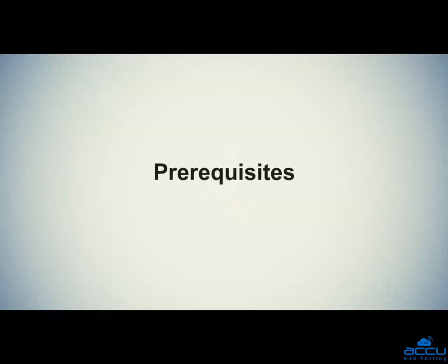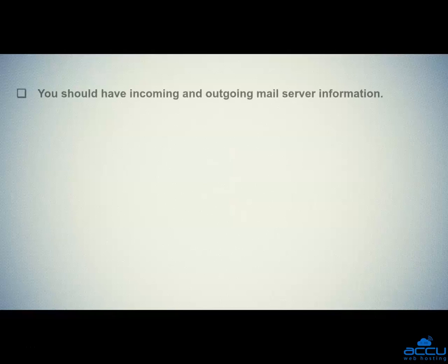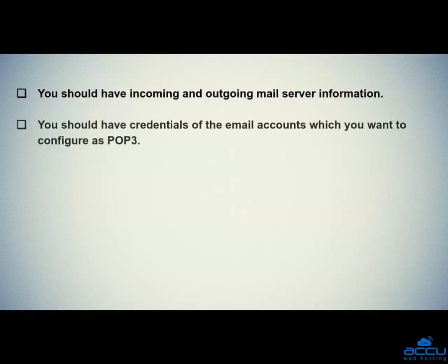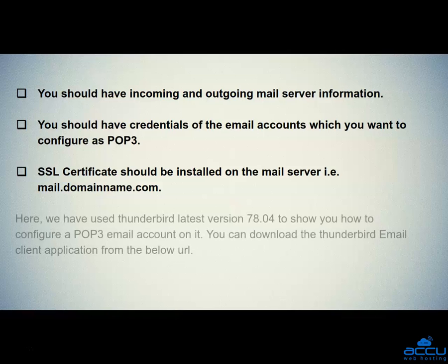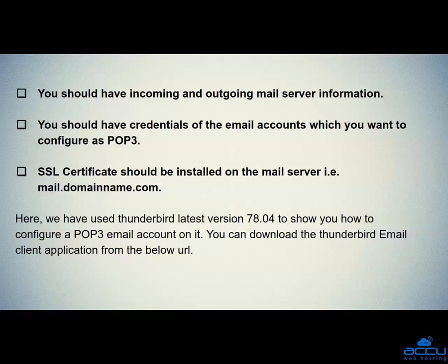Let's begin the tutorial. First, we will see the prerequisites. First, you should have incoming and outgoing mail server information. Second, you should have credentials of the email account which you want to configure as POP3. Third, an SSL certificate should be installed on the mail server, that is mail.domainname.com. Here, we have used Thunderbird's latest version 78.04. You can download the Thunderbird email client application from the below URL.